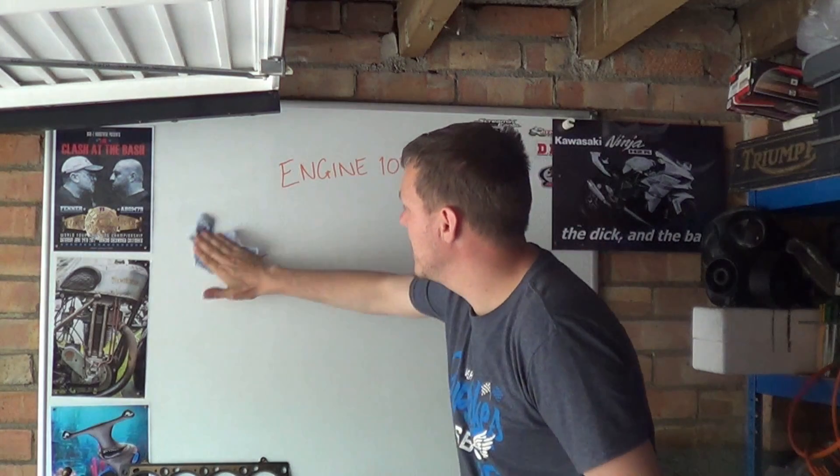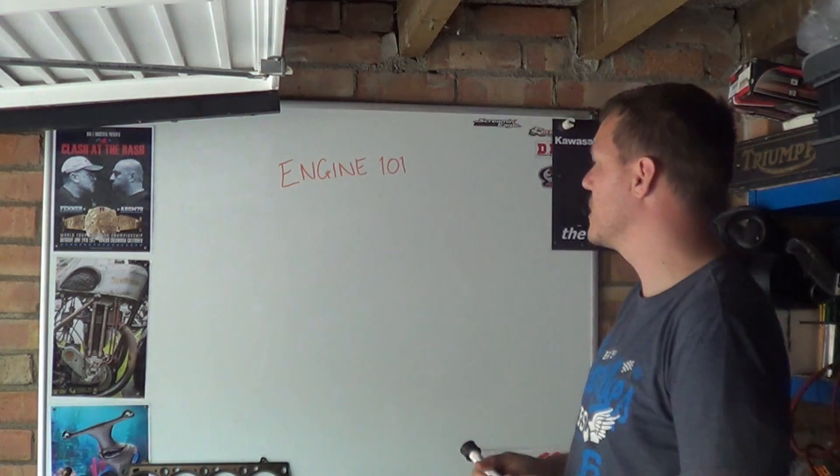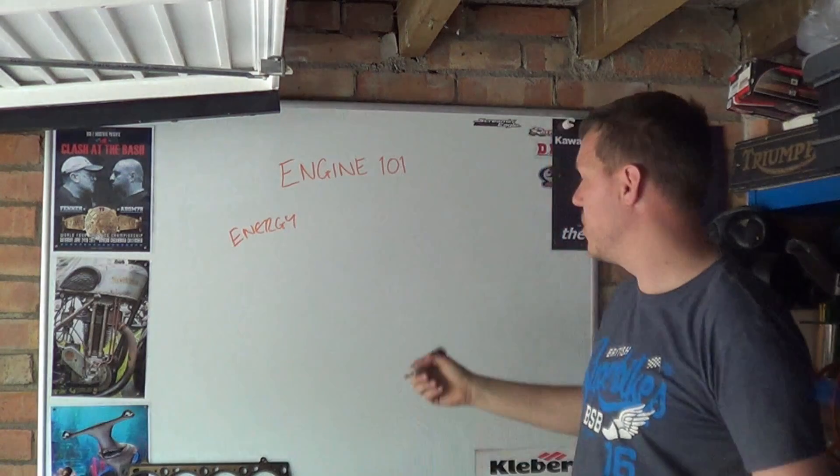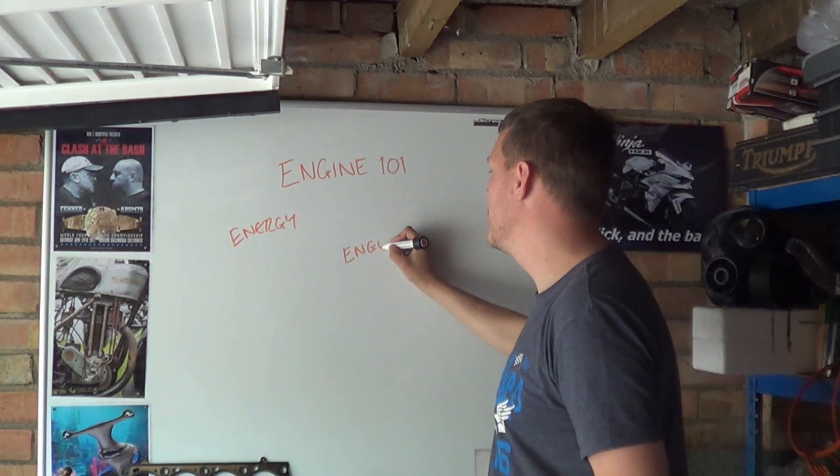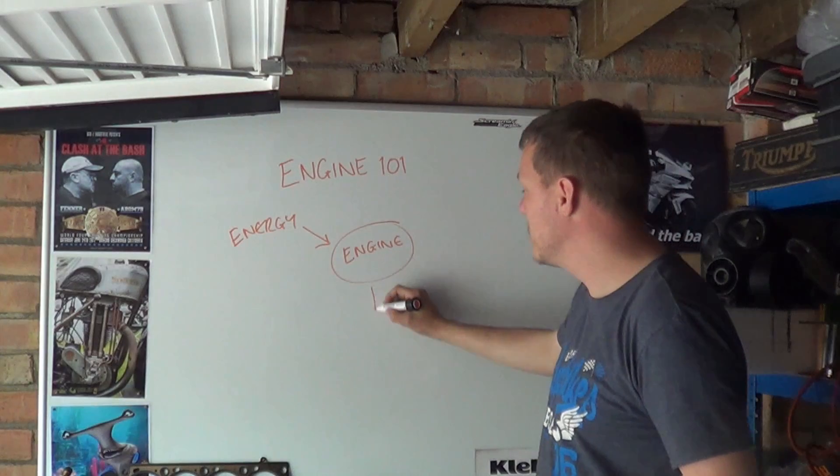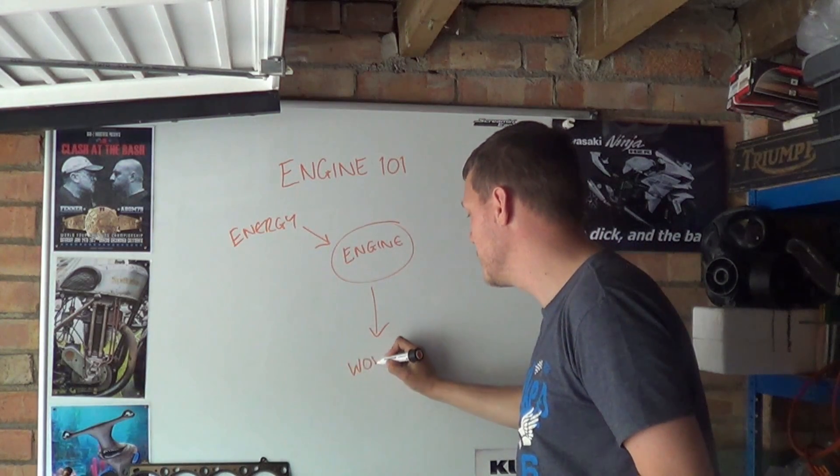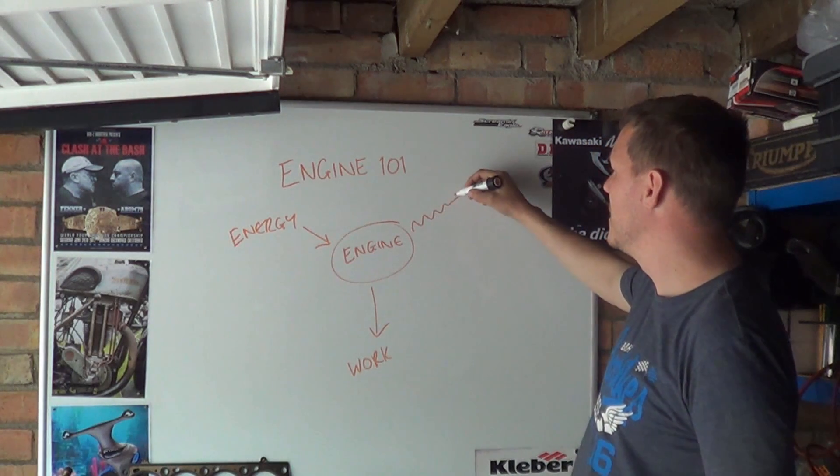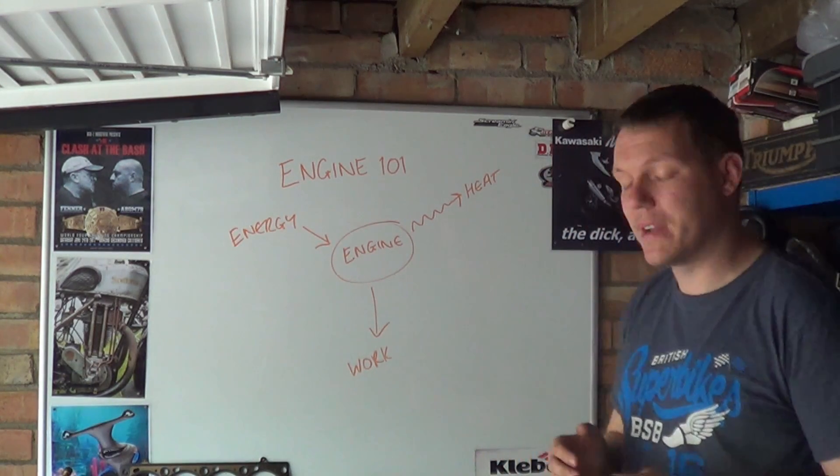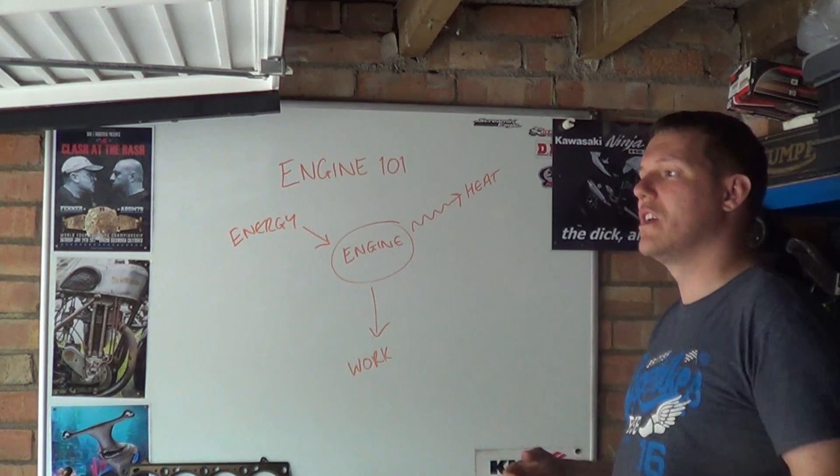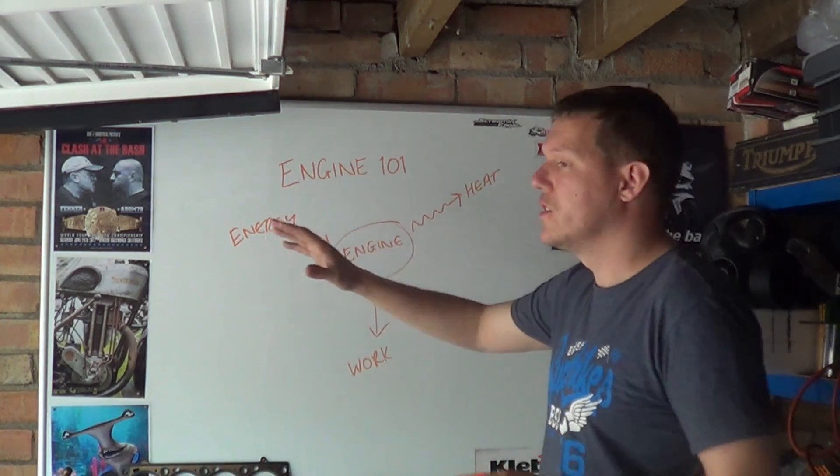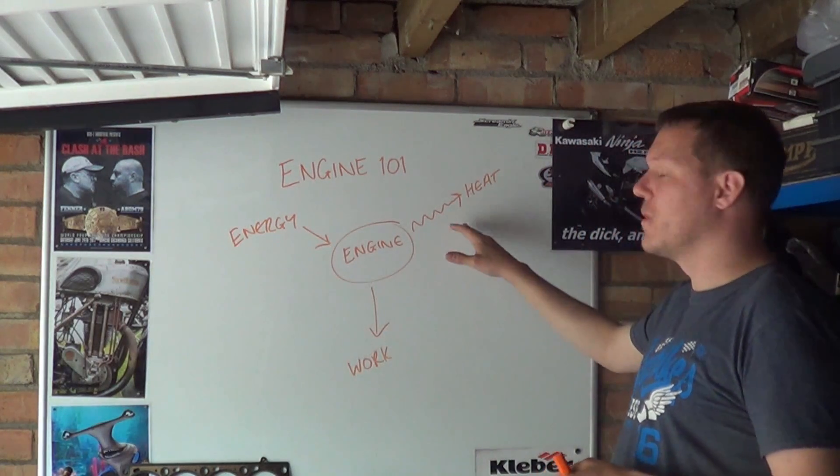So the first thing we have to look at is how the actual entire process works. So we have an energy source. Energy. We have an energy source and then we have an engine. So what we do is we put an energy source in and out of it we get work and as a waste product, unfortunately, we have heat. Now this is all to do with thermodynamics. Thermodynamics is the study of the transfer and the dynamics of heat. You cannot put energy in, get work out without waste heat.